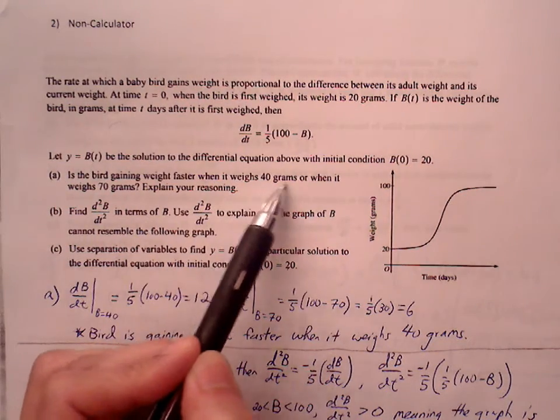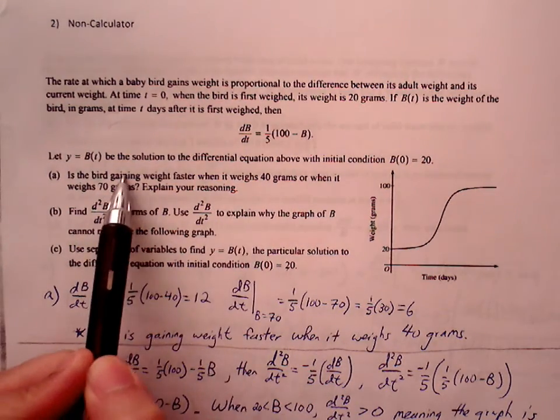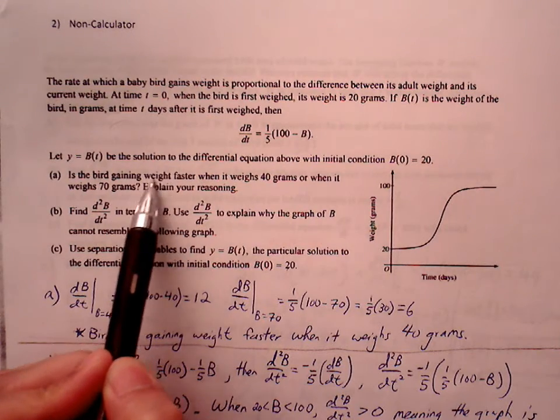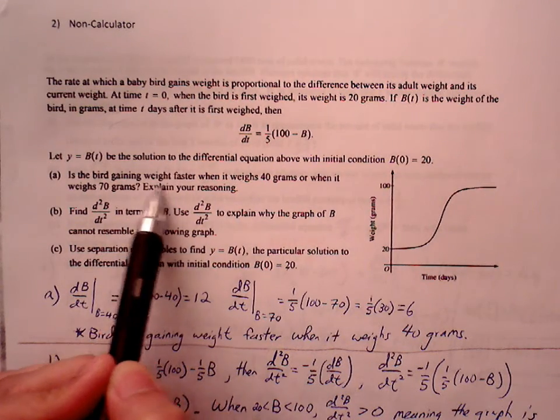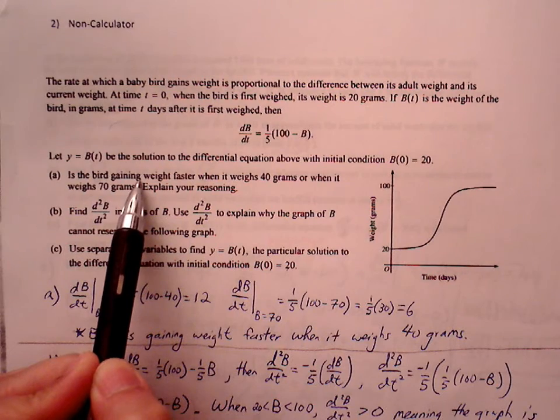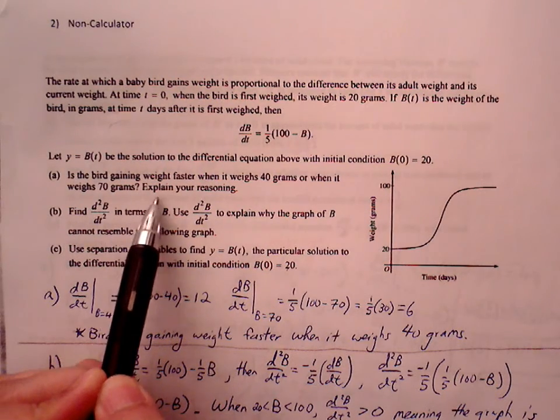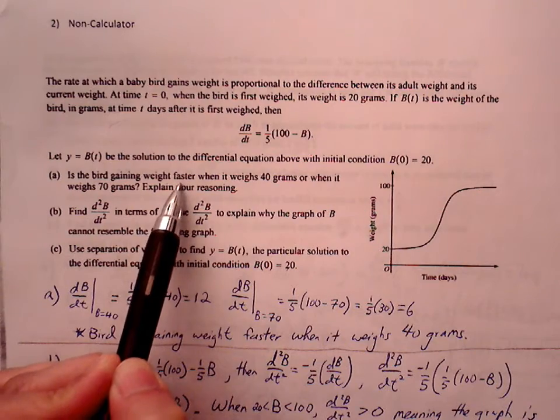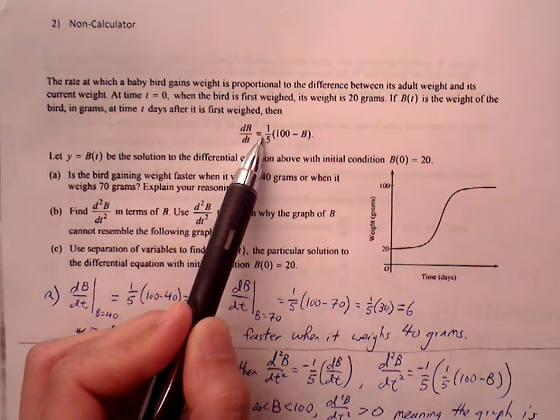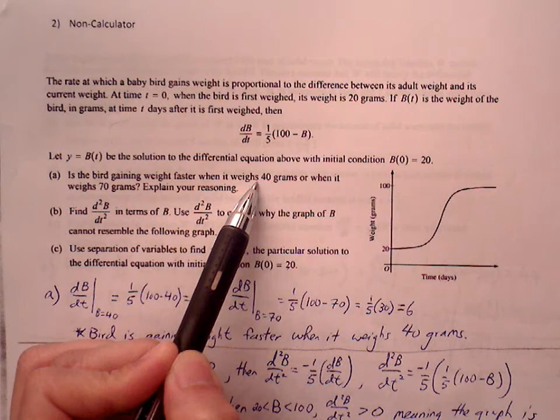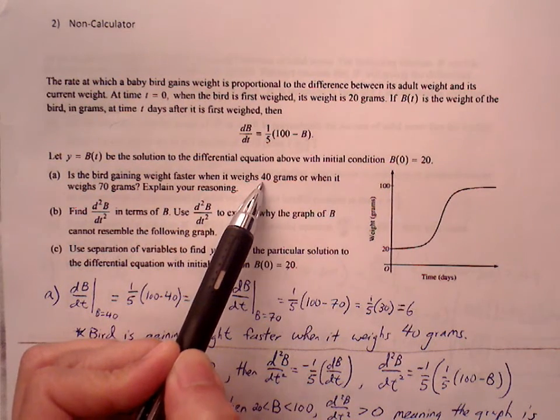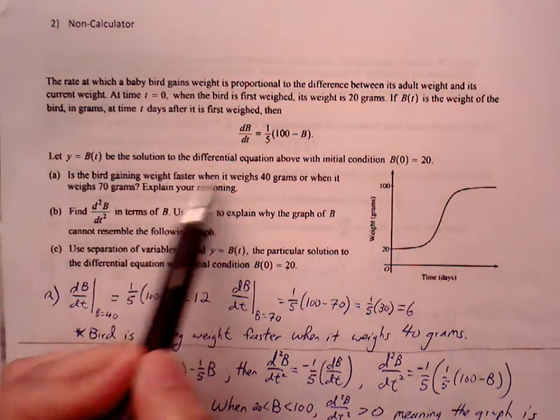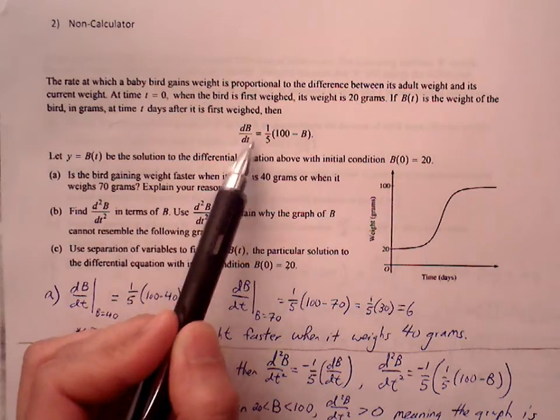For part (a), is the bird gaining weight faster when it weighs 40 grams or when it weighs 70 grams? We're trying to figure out the rate of change of the bird's weight, so we have to look at our dB/dt and decide: when B is 40 or when B is 70, which one is going to produce a greater rate of change?